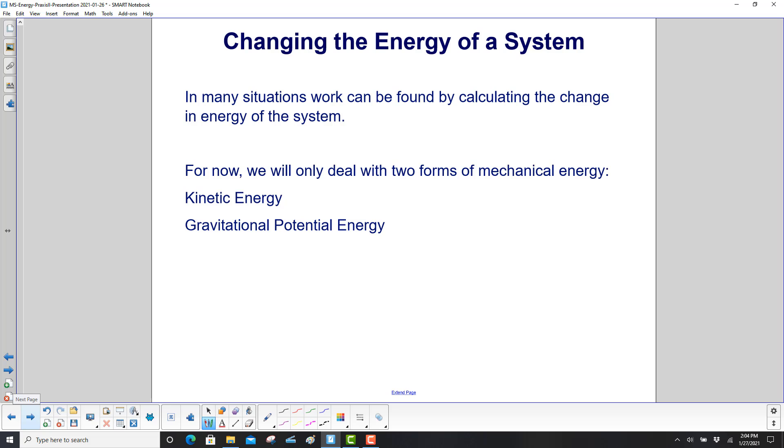In many situations, we can find the work done by calculating the change in energy of the system. For now, we're only going to deal with the two forms of mechanical energy that we defined early on, kinetic energy and gravitational potential energy.